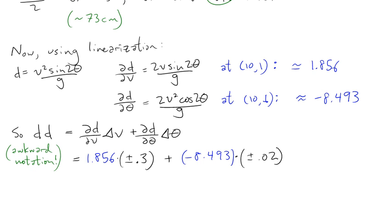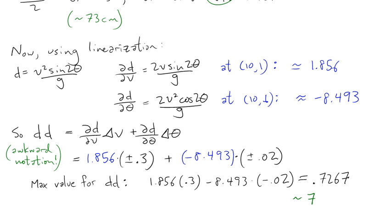So, if we're interested in the maximum possible error, the maximum value for dd is obtained by taking, for instance, the plus 0.3 and then the minus 0.02. So, you get these errors adding up. And that gives a value of about 0.7267. It's not quite exactly what we had when we did it previously using d of v and theta, but it's pretty close. And if you round up, it's about 73 centimeters.